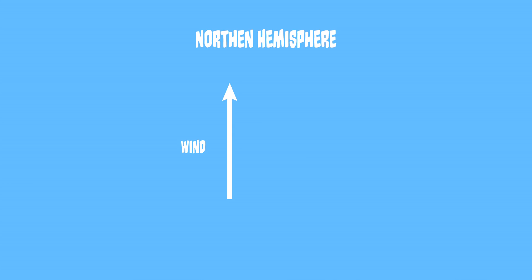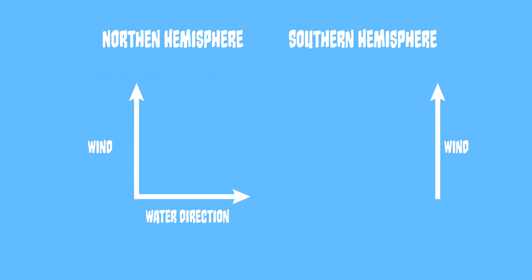The depth of this current is several tens of meters and can change with latitude and wind speed. Overall, the average flow of the Ekman Spiral results in a current that flows exactly 90 degrees to the right of the wind in the Northern Hemisphere. The same process happens in the Southern Hemisphere with water flowing at a 90 degree angle to the left of the wind.